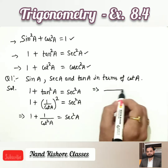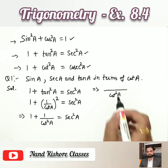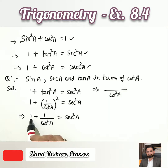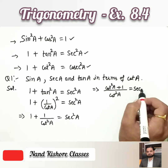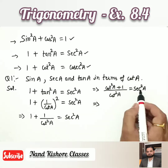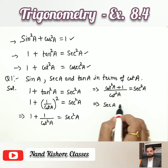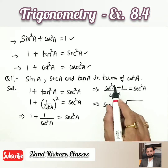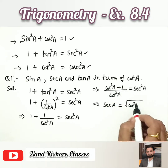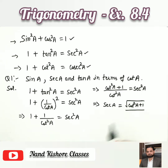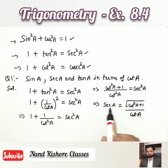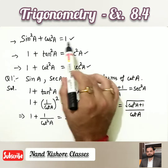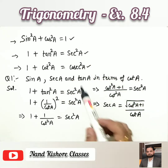Taking cot²A as LCM, we get (cot²A + 1)/cot²A = sec²A. Taking square root on both sides, we get sec A = √(cot²A + 1)/cot A, since the square on cot²A is removed leaving just cot A in the denominator. That is how sec A is expressed in terms of cot A.